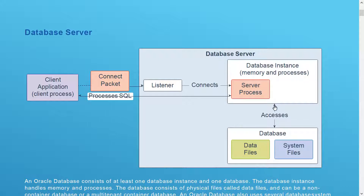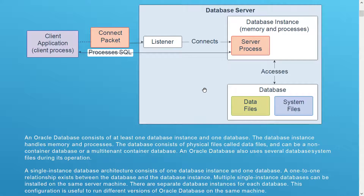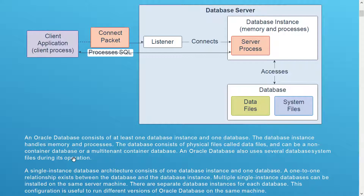An Oracle database consists of at least one database instance and one database. Whenever we talk about an instance, that means it is memory and processes — different processes along with the memory component that create one instance. In Oracle, a database has one instance or multiple instances along with a database. Whenever we talk about a database, that means it has certain data files and system files. A database consists of physical files called data files, and it can be a non-container database or a multi-tenant database.